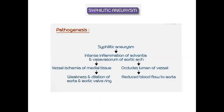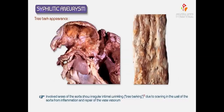Regarding its pathogenesis: syphilitic aneurysm leads to intense inflammation of the adventitia and vasa vasorum of the aortic arch, which in turn may lead to two outcomes — vessel ischemia of medial tissue, or occlusion of the vessel lumen. Vessel ischemia leads to weakness and dilatation of the aorta and aortic valve involvement, whereas occlusion may reduce blood flow to the aorta. The involved areas of the aorta show irregular intimal wrinkling, giving a tree-bark appearance.